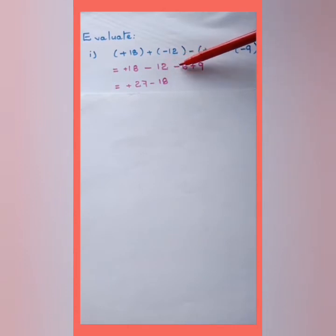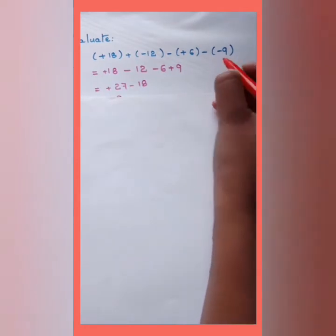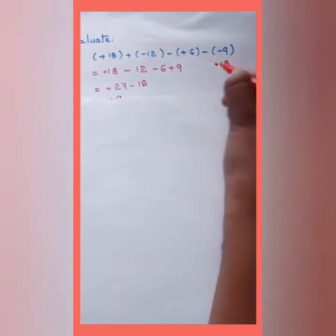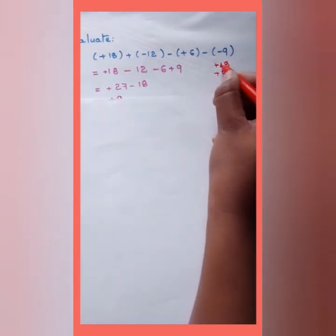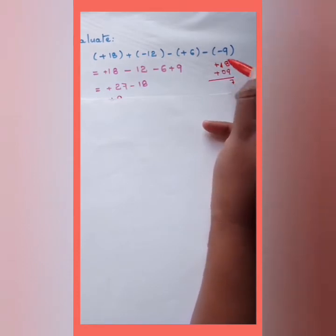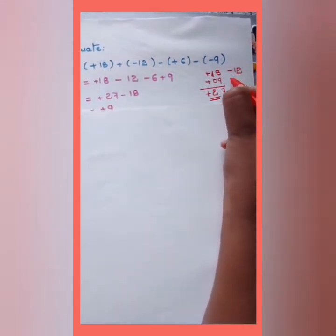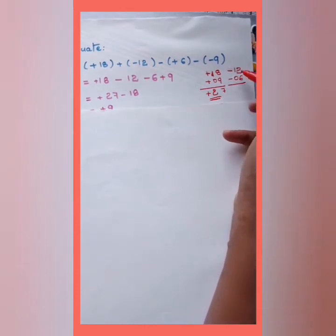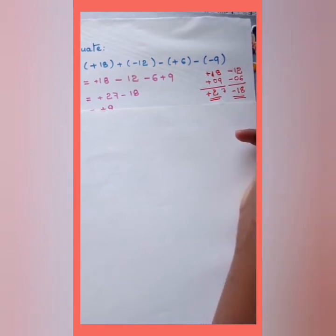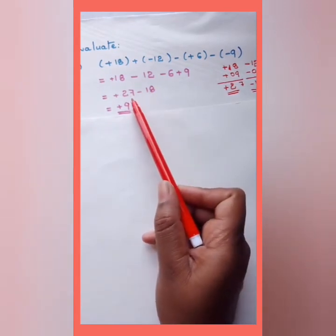Now we group the positives and negatives: +18 and +9 have the same sign, so add them to get +27. −12 and −6 have the same sign, so add them to get −18. Now we have +27 and −18 with different signs, so subtract the smaller from the larger: 27 − 18 = 9. The answer is +9.